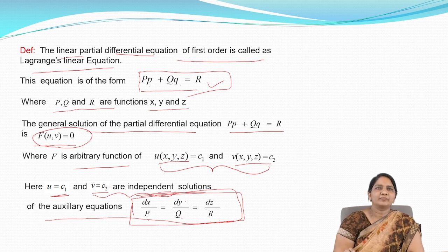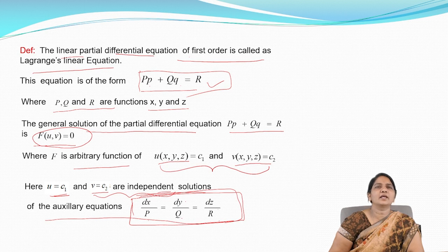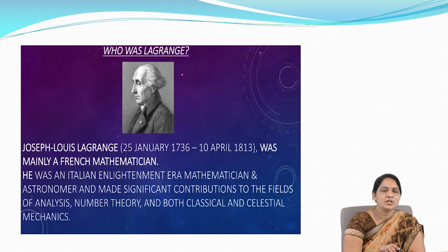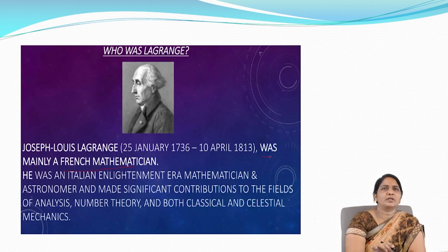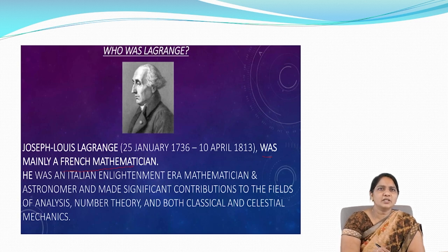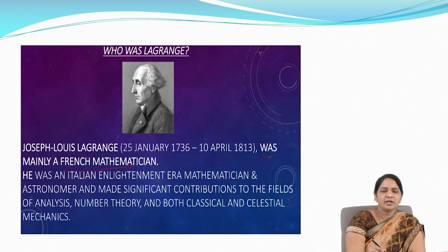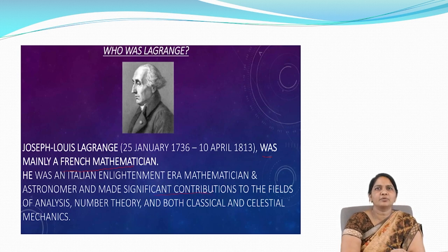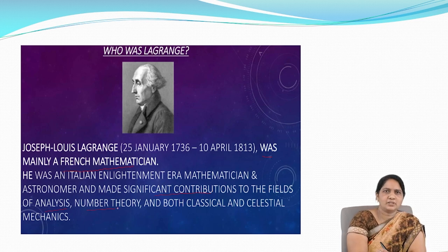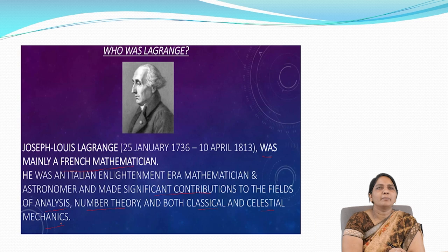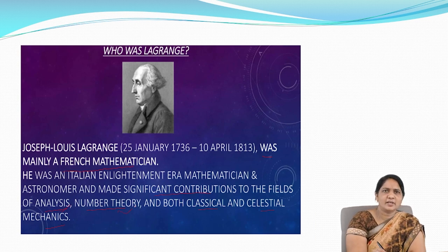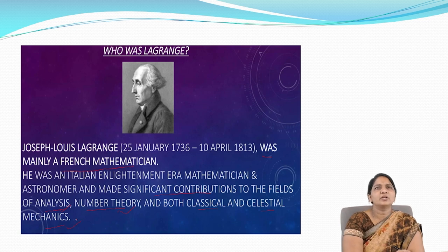Before going to the solution of Lagrange's linear equation, who is Lagrange? Joseph Louis Lagrange is his complete name. He was a French mathematician who made significant contributions to the fields of analysis, number theory, and both classical and celestial mechanics.